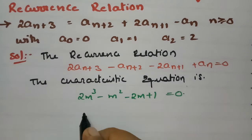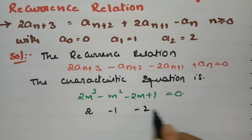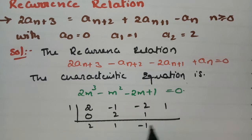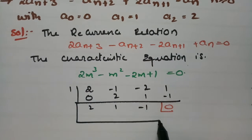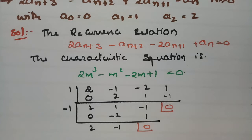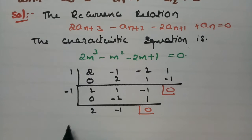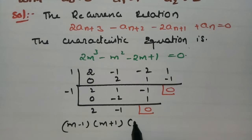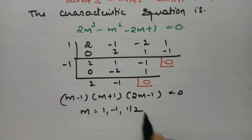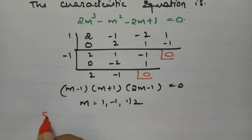Now we have to find the characteristic roots. Checking m = 1: 2(1) - 1 - 2 + 1 = 0, so m = 1 is a root. Checking m = -1: -2 - 1 + 2 + 1 = 0, so m = -1 is also a root. Factoring gives (m - 1)(m + 1)(2m - 1) = 0, so the roots are m = 1, m = -1, and m = 1/2.